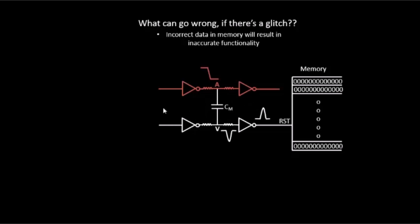Shielding basically means we put a wire on either side of the clock net. These wires are connected either to VDD or ground, because VDD and ground don't switch. As a result, the victim is protected. By shielding, we are breaking the coupling capacitance between the aggressor and the victim. Shields are either both connected to VDD, both to ground, or one to VDD and one to ground — the key idea is that shields don't switch.